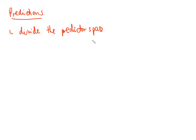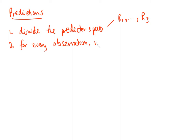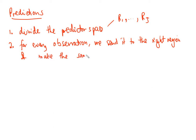We're going to see the possible values for x1 up to xp into j distinct non-overlapping regions R1 all the way to Rj, depending on how many regions we're going to have. For every observation, we send it to the right region.